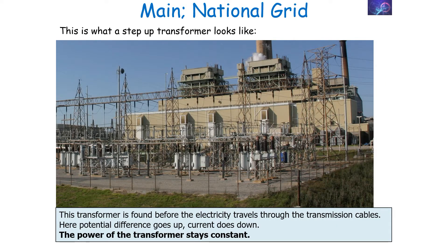A step-up transformer looks like the following. This transformer is found before the electricity travels through the transmission cables. In this transformer the potential difference goes up, the current goes down, but the power in our transformer stays constant.